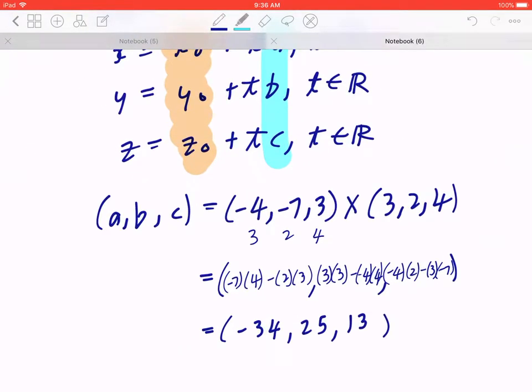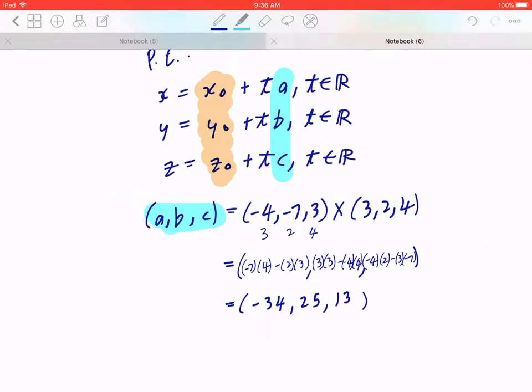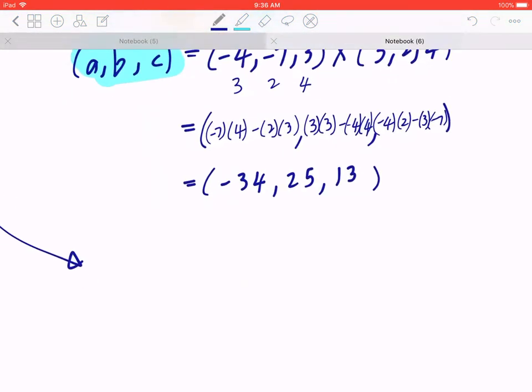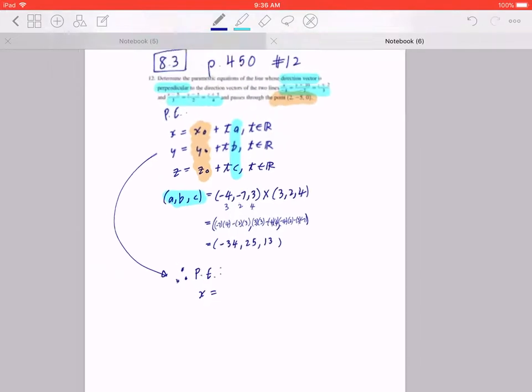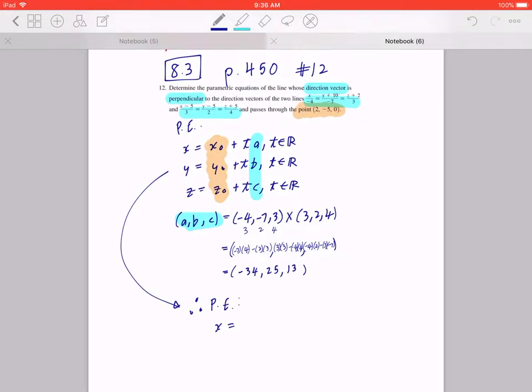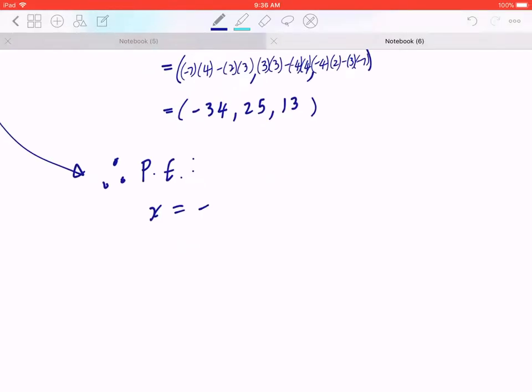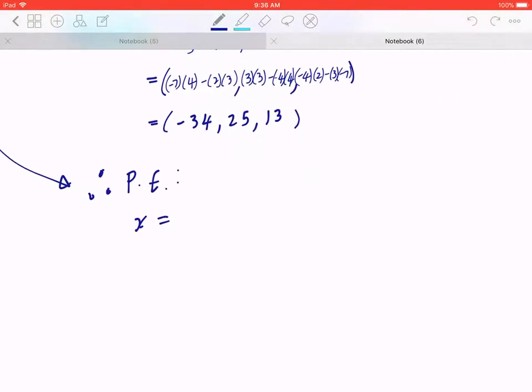Once you have the direction vector and the point, you can now write down the parametric form. So therefore, the parametric equations are x equals, and you can line them up vertically. Since you know the point is going to be (2, -5, 0), so 2, -5, and 0.